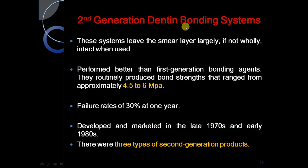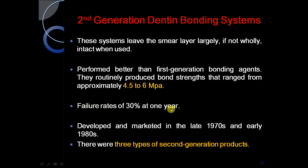Second generation dentine bonding systems leave the smear layer largely intact. They performed better than first generation, routinely producing bond strengths ranging from approximately 4.5 to 6 MPa — very important values. Failure rates were 30% at one year. They were developed and marketed in the late 1970s and early 1980s.